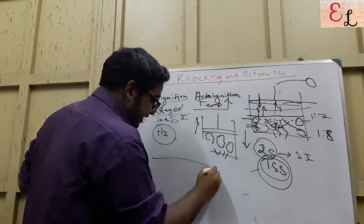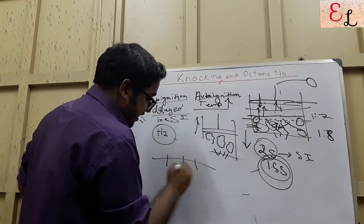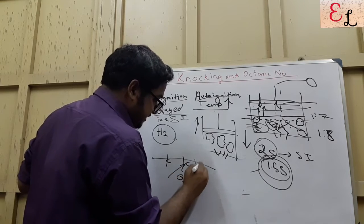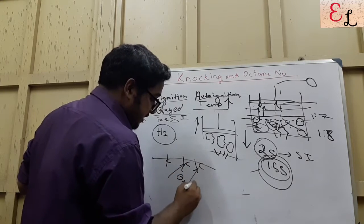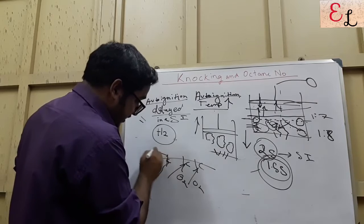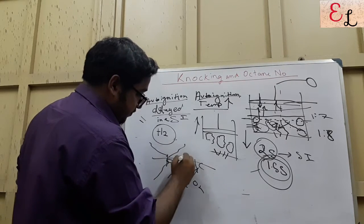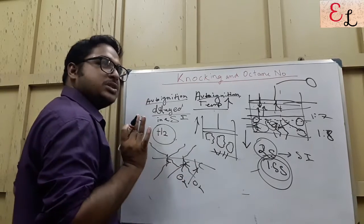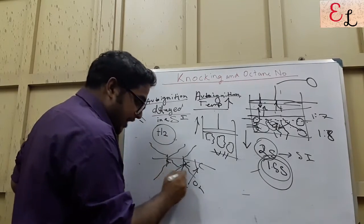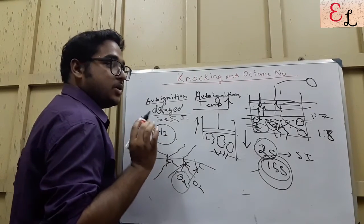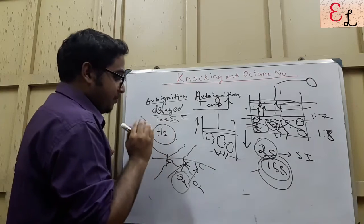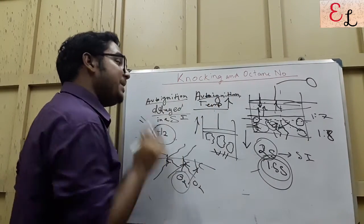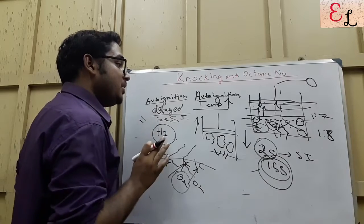Moreover, if this is a straight chain with carbon centers, oxygen easily attacks these carbon centers. Whereas if there is branching — if the chain has undergone isomerization — steric influence occurs and easy attack of oxygen does not take place. So there are several methods by which auto-ignition temperature can be increased and auto-ignition can be delayed or prevented.